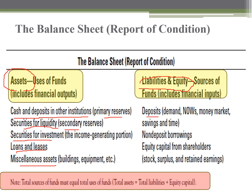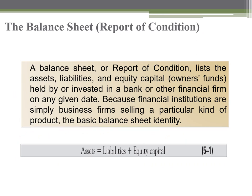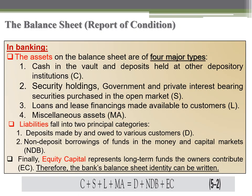On the liabilities and equity side, we have deposits — demand, money market, savings, and time deposits — representing customer funding. We also have non-deposit borrowings as a source not related to deposits, and equity capital from shareholders comprising stock, surplus, and retained earnings. The main equation remains: assets equals liabilities plus equity capital.